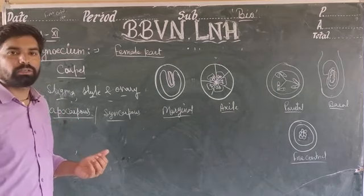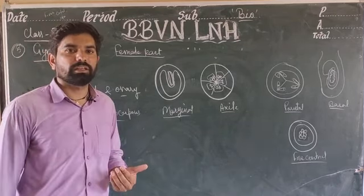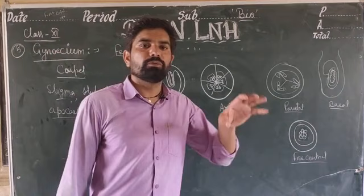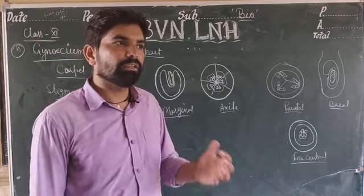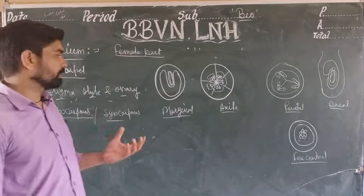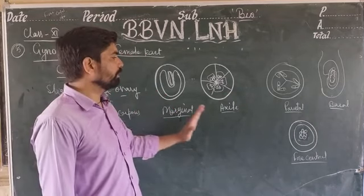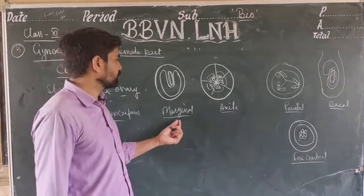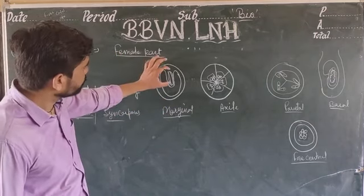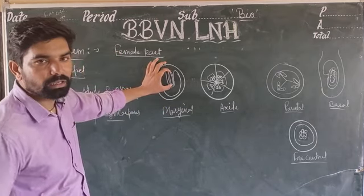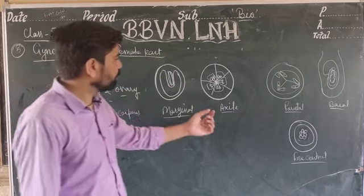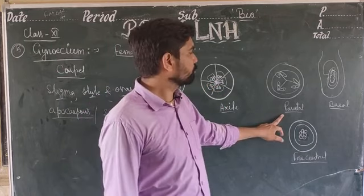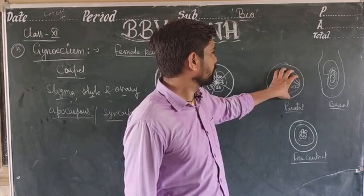Now, how ovules are arranged in the ovary is known as placentation. The tissue called placenta arranges the ovules in the ovary. In marginal placentation, ovules are along the marginal area. In axile placentation, the ovules are spread out from the center in all directions.